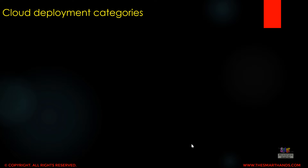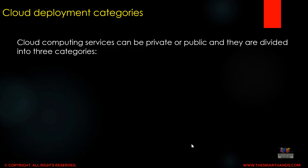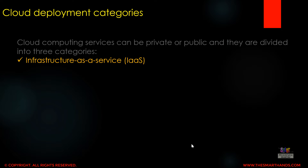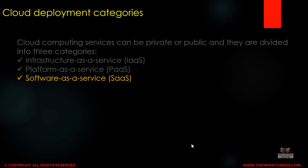Now we'll discuss about the cloud deployment categories. Cloud computing services can be private or public and they are divided into three categories. The first one is IaaS — Infrastructure as a Service. The second is PaaS — Platform as a Service. The third one is SaaS — Software as a Service.